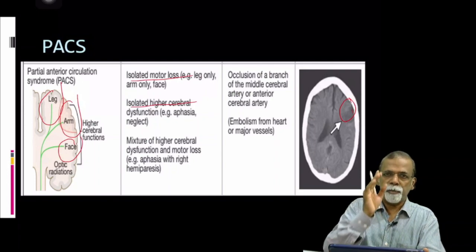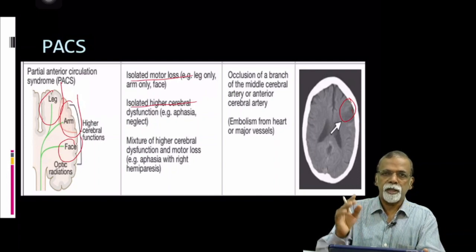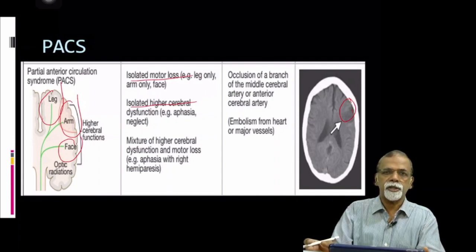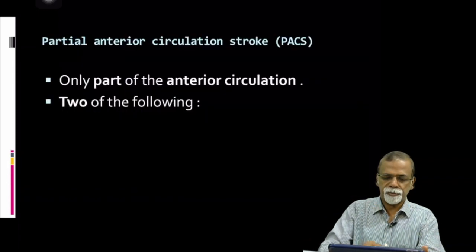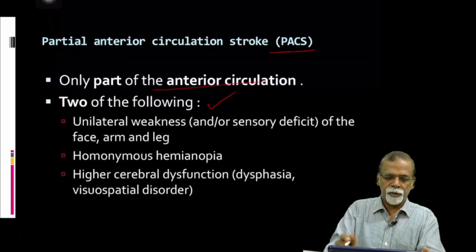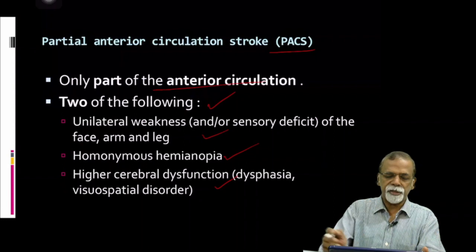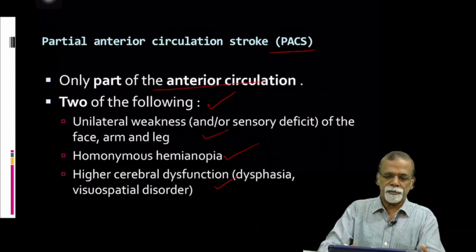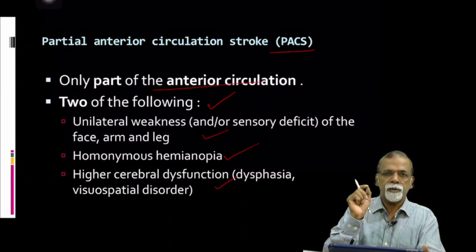There will be no complete hemiparesis — partial weakness or a combination of partial weakness plus cortical dysfunction. If cortical dysfunction is present, then you can say definitely it is a partial or sometimes total anterior circulation stroke. Imaging will confirm your clinical diagnosis. PACS consists of involvement of part of the anterior circulation — two of the following: unilateral weakness, homonymous hemianopia, and cortical dysfunction like aphasia, agnosia, apraxia, or visuospatial dysfunction. A feature of large vessel stroke is evidence of cortical dysfunction.